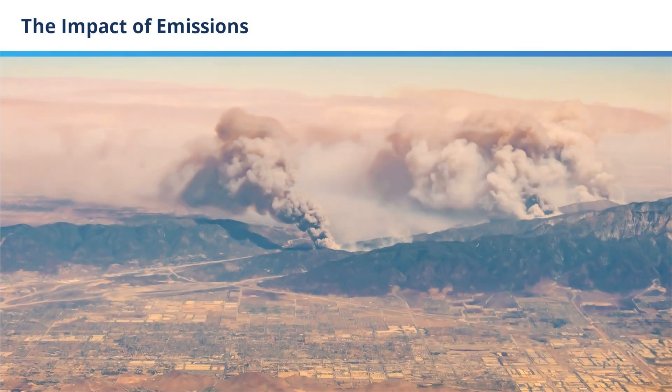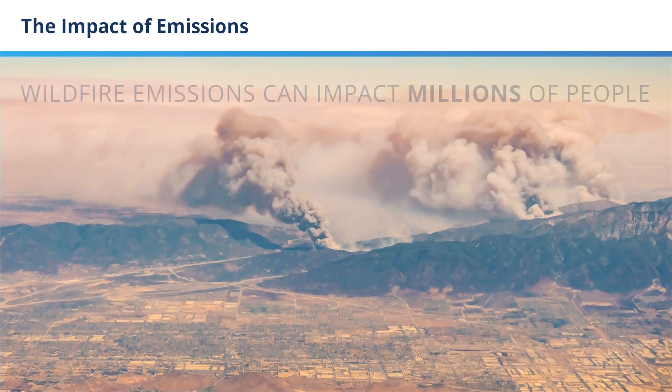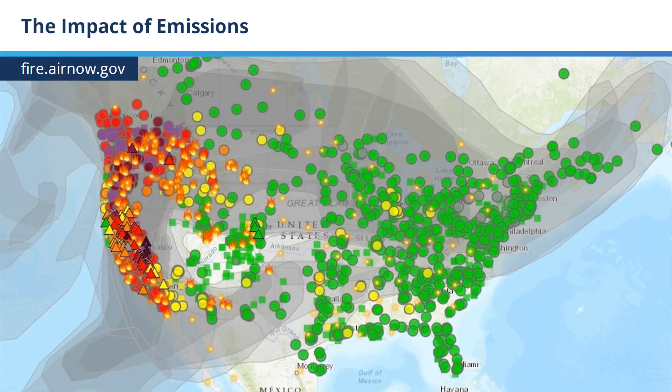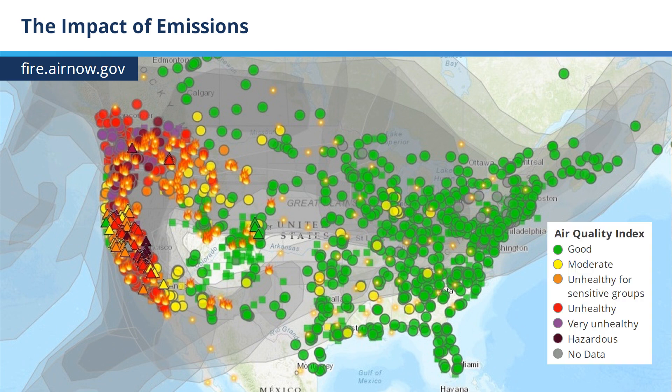Wildfire emissions don't just impact the local community. They can impact large areas of the United States as well as the globe, ultimately impacting millions of people. Here is a fire and smoke map from the EPA's Air Now page. The circles indicate permanent particulate matter monitors, and the triangles and squares indicate low-cost or temporary ones. The color of each sensor indicates the air quality from hazardous to good.